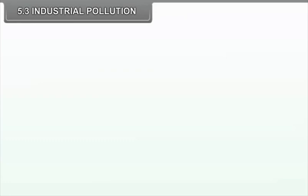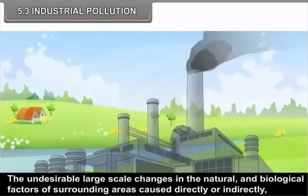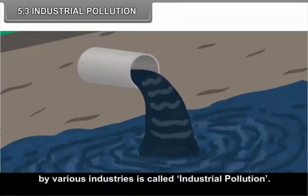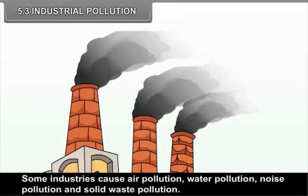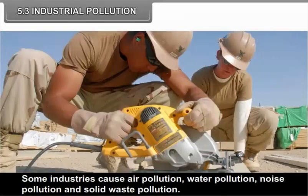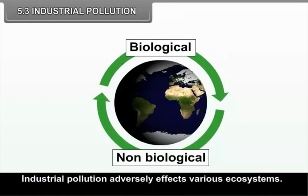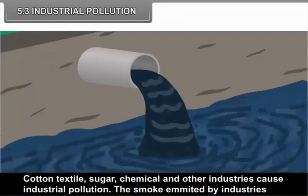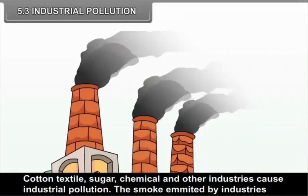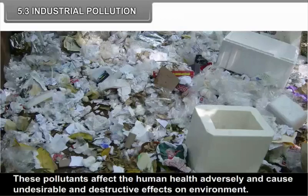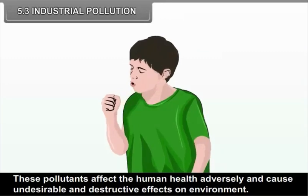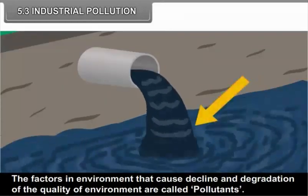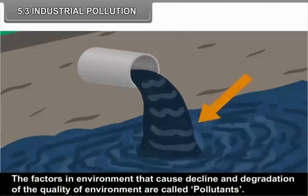5.3 Industrial Pollution. The undesirable large-scale changes in the natural and biological factors of the surrounding areas, caused directly or indirectly by various industries, is called industrial pollution. Some industries cause air pollution, water pollution, noise pollution and solid waste pollution. Industrial pollution adversely affects various ecosystems. Cotton textile, sugar, chemical and other industries cause industrial pollution. The smoke emitted by industries and water and solid waste contain pollutants that affect human health adversely and cause destructive effects on the environment. The factors in the environment that cause decline and degradation of the quality of environment are called pollutants.